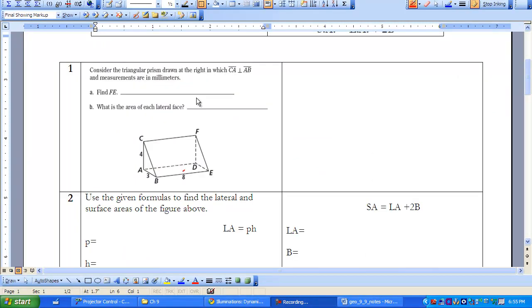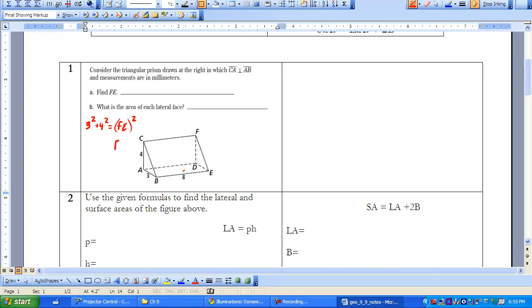Before we begin using the two lateral area and surface area formulas to find the surface area of this prism, I'm going to answer a few questions first. First of all, we need to find out what Fe is. We can use Pythagorean Theorem in order to find that. We know that 3 squared plus 4 squared is going to equal Fe squared. Just for purposes of speed, I'm going to go ahead and do the calculation. The square root of 3 squared plus 4 squared is actually 5. So we know that the length of this side is 5.